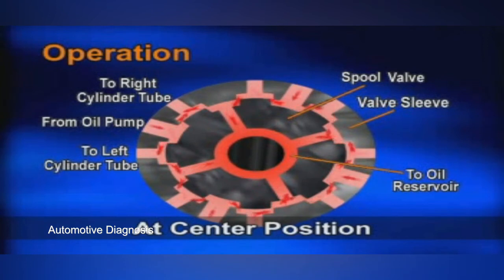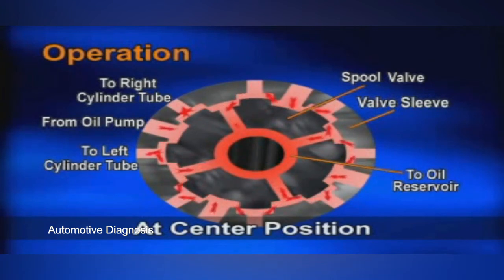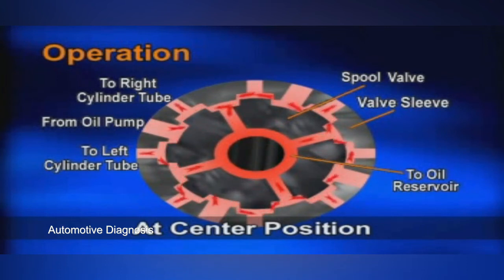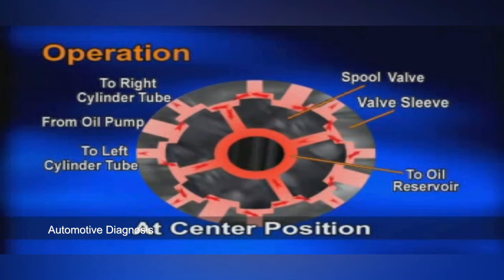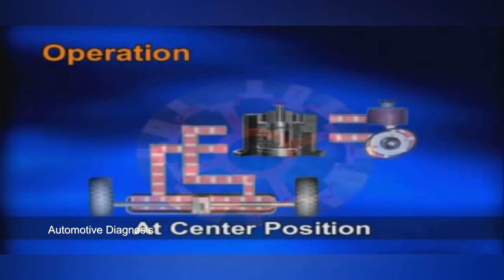The seal rings on either side of the groove confine the fluid, and it is therefore forced to flow through the drilled passages in the bottom of the groove. Because there is clearance between the valve sleeve and spool valve flats with drilled passages, the fluid is able to flow through these passages to the center of the spool valve. The fluid exits the spool center through the drilled passages where it is directed back to the pump reservoir, and there is no pressure difference between the right and left cylinder tubes.